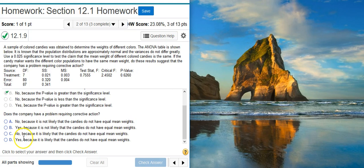So the answer is going to be no, no corrective action is required. Because, let's see here, is it likely the candies do not have equal mean weights? No, it's likely that they do. So we're going to select answer A even though it's got this awkward double negative.